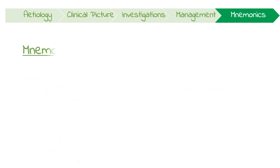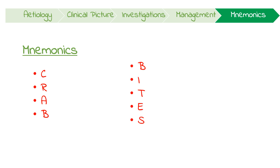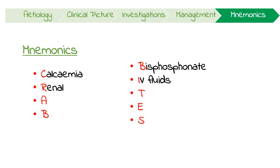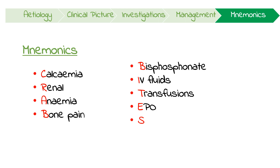To remember how to symptomatically manage multiple myeloma, just remember CRAB bites. Hypercalcemia can be managed with bisphosphonates. Renal impairment might need IV fluids. Anemia can be managed with blood transfusions and EPO. Bone pain can easily be managed with steroids.